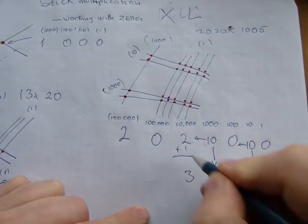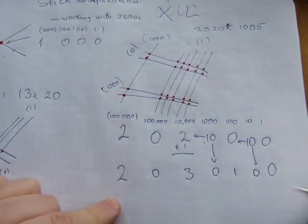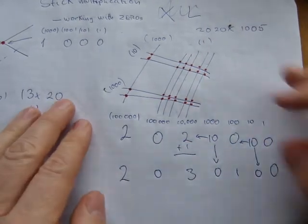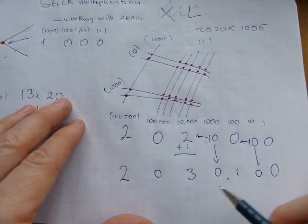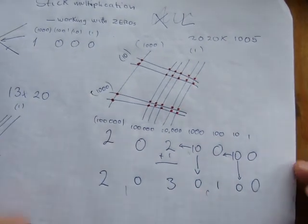Now that one gets added to what's already in there, and that gets written down there. Zero carries down and the two carries down. So my final answer for this multiplication here is two million thirty thousand one hundred. That's the final answer for this one.